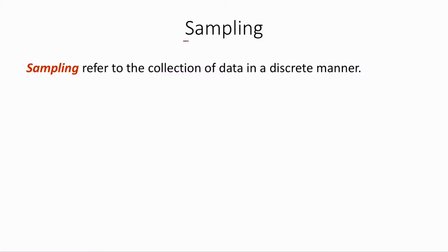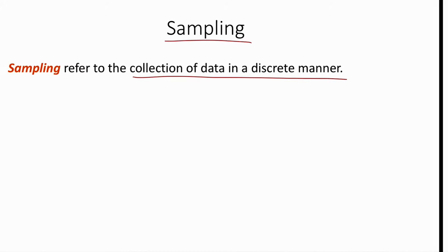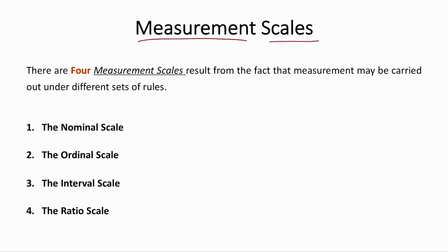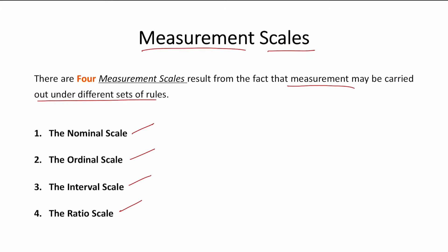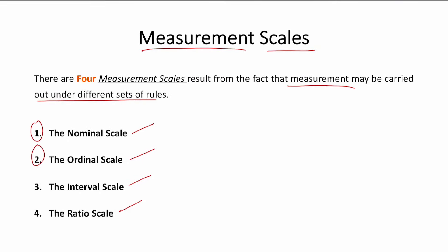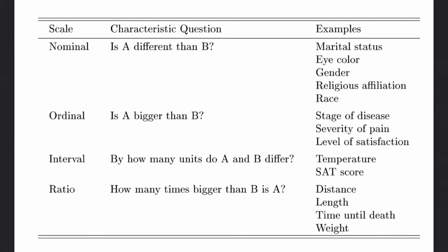Sampling refers to the collection of data in a discrete manner, collecting data separately from each other. Measurement is defined as the assignment of numbers to objects or events according to a set of rules. There are four types of measurement scales arising from different sets of rules: the nominal scale, ordinal scale, interval scale, and ratio scale.